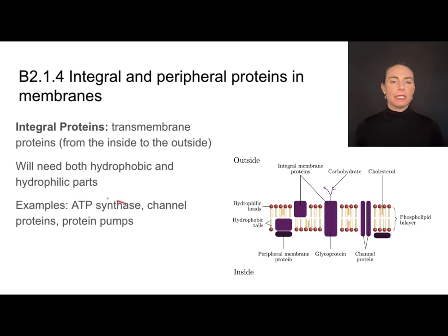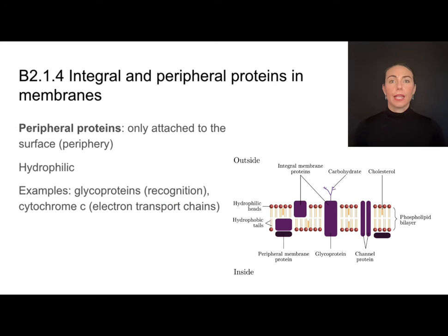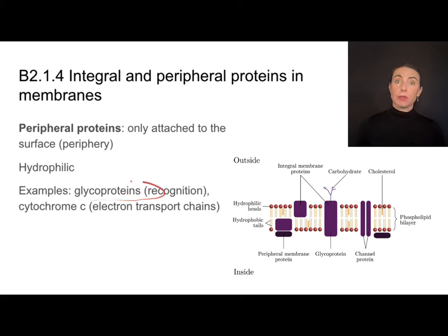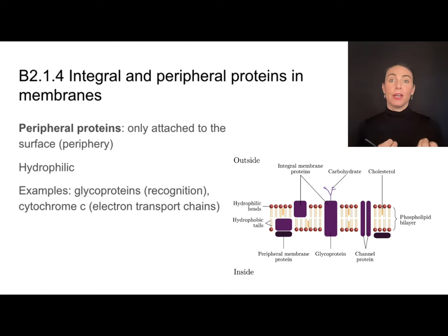Examples of transmembrane proteins include ATP synthase, which is an enzyme in cell respiration, channel proteins, and protein pumps. Peripheral proteins are only attached to the surface of the cell membrane and don't go all the way through. Examples include glycoproteins for cell recognition and cytochrome C, an electron transport chain protein. Their different functions require different forms — the amino acids in different positions need to align with the polarity of those phospholipids.